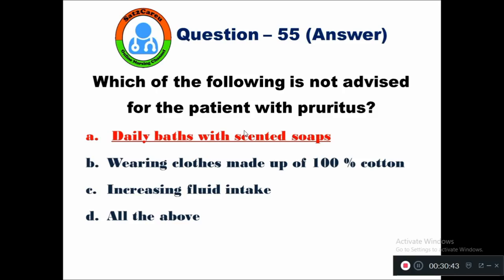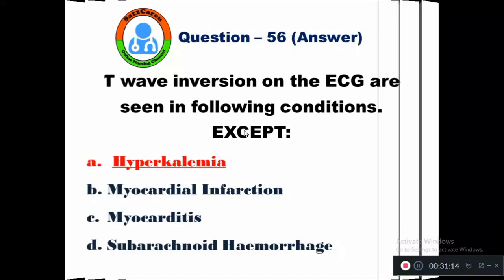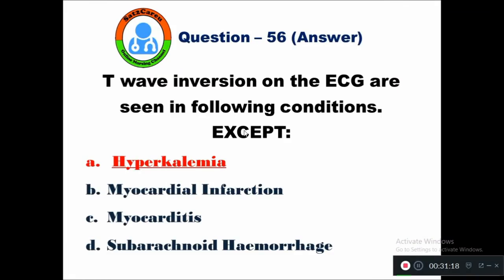Question 56: T-wave inversion on the ECG is seen in all the following conditions except — option A hyperkalemia, B myocardial infarction, C myocarditis, D subarachnoid hemorrhage. T-wave inversion is seen in all these except hyperkalemia, where there will be elevation of the T-wave. In myocardial infarction, myocarditis, and subarachnoid hemorrhage, we see inversion of the T-wave.